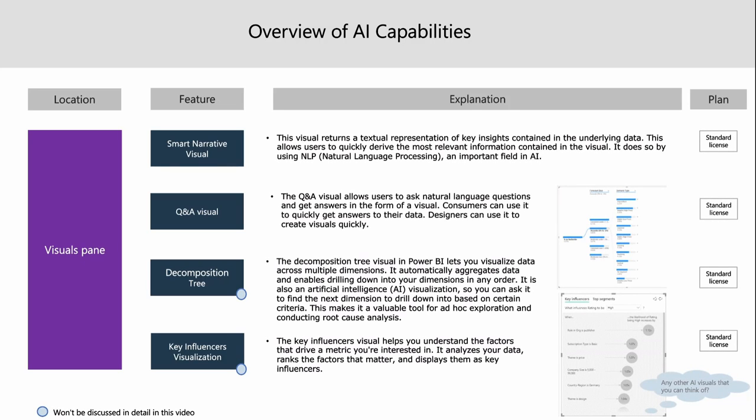The smart narrative visual returns a textual representation — a summary — of what the data is supposed to be telling you. You can also perform modifications to what you want to extract from the data. The Q&A visual lets you ask certain questions in Power BI regarding a certain visual. If you're a designer, you can even specify what kind of visual you want and Power BI will create it for you using natural language.